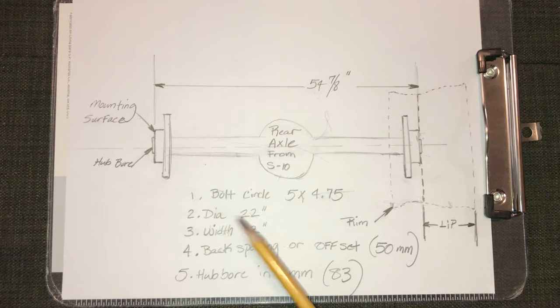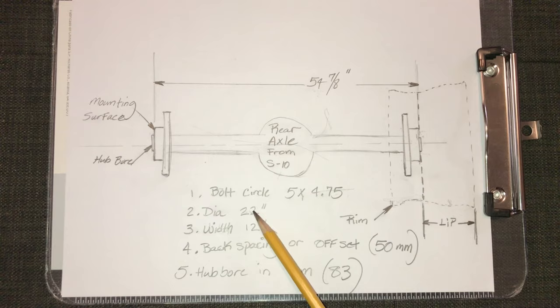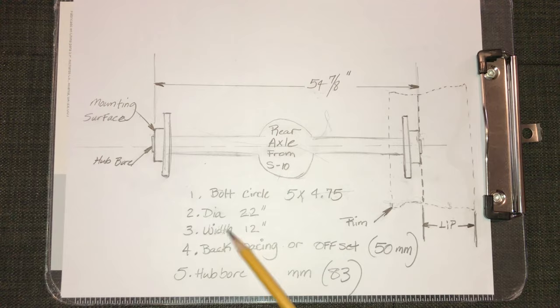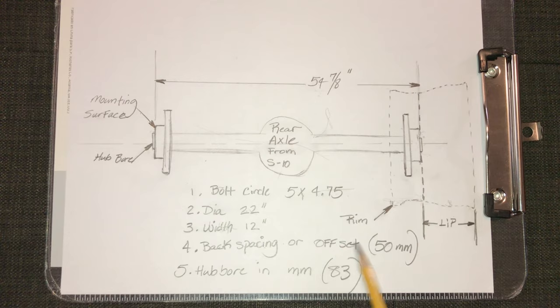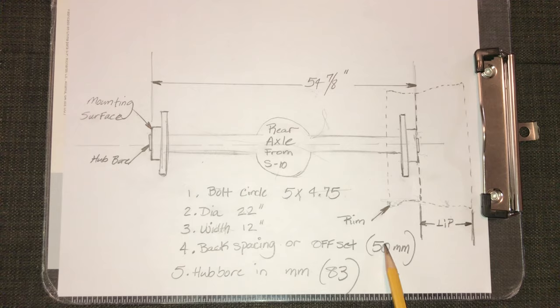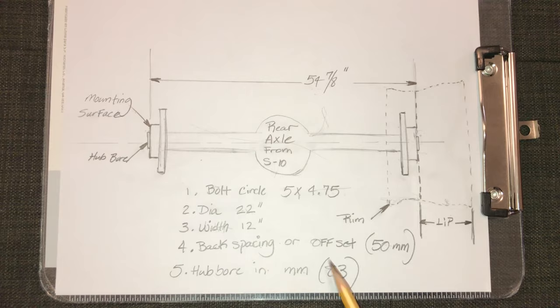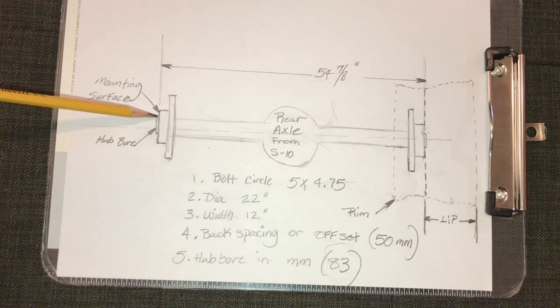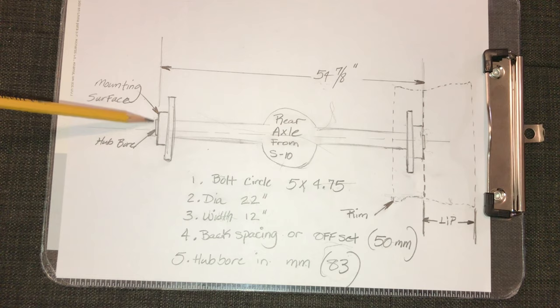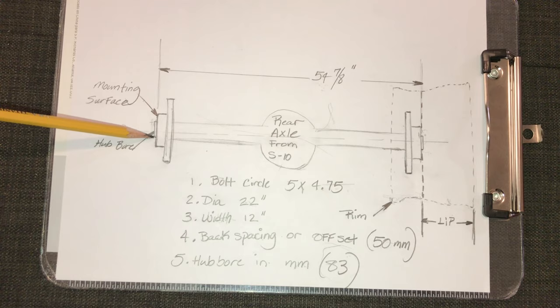My diameter is 22. I think in the diagram that I had earlier I had a 20 inch. We went ahead and went up to a 22 when we had it built because we could fit it under the fender. The width is 12. The back spacing or offset, as I mentioned earlier, we went ahead and went with metric, a metric number. I think it's what it required or what it called for on the build sheet. So that's 50 millimeters we used. And the hub bore in millimeters, 83 millimeters, is the actual distance from here to there and that's basically the diameter of that hub bore. So you have enough clearance that it fits over the hub.